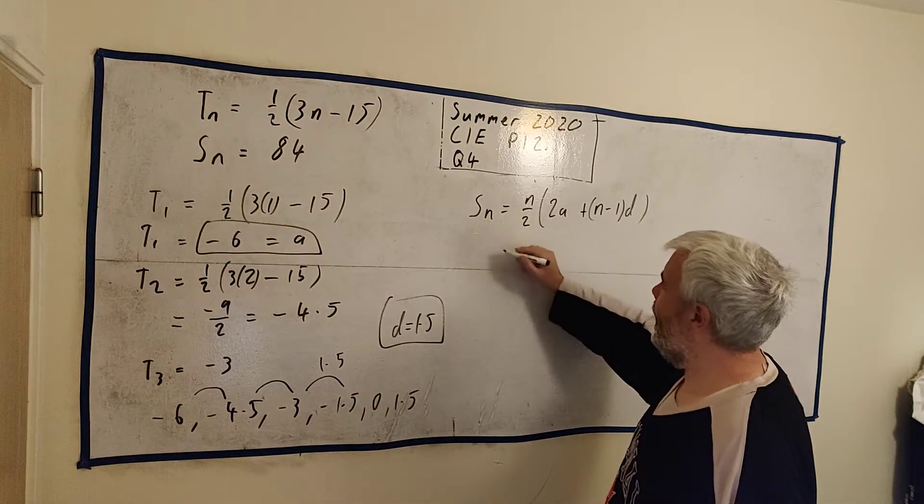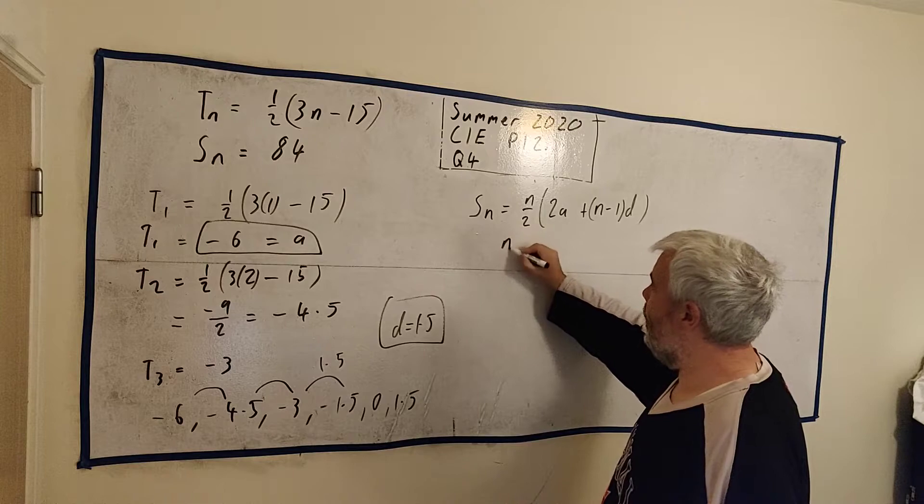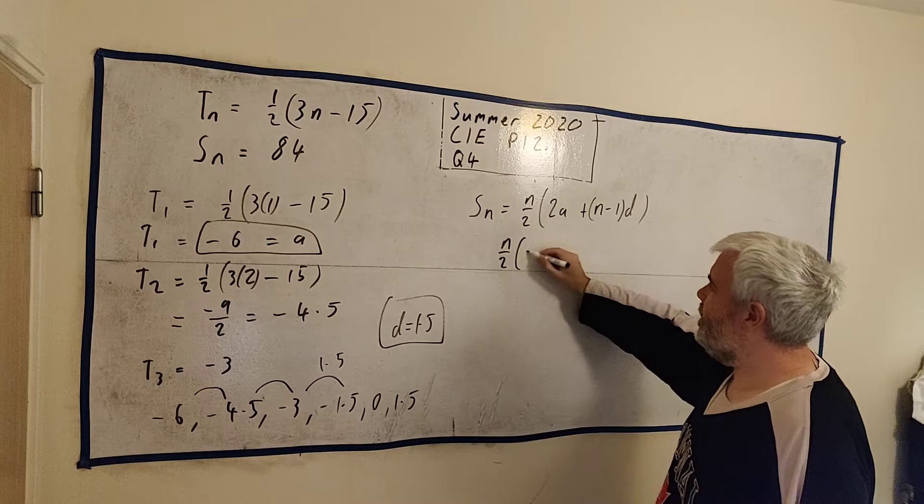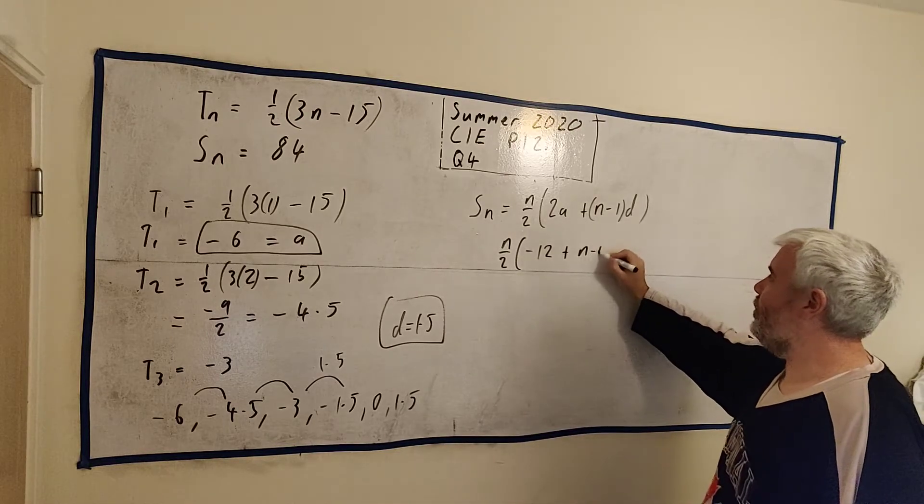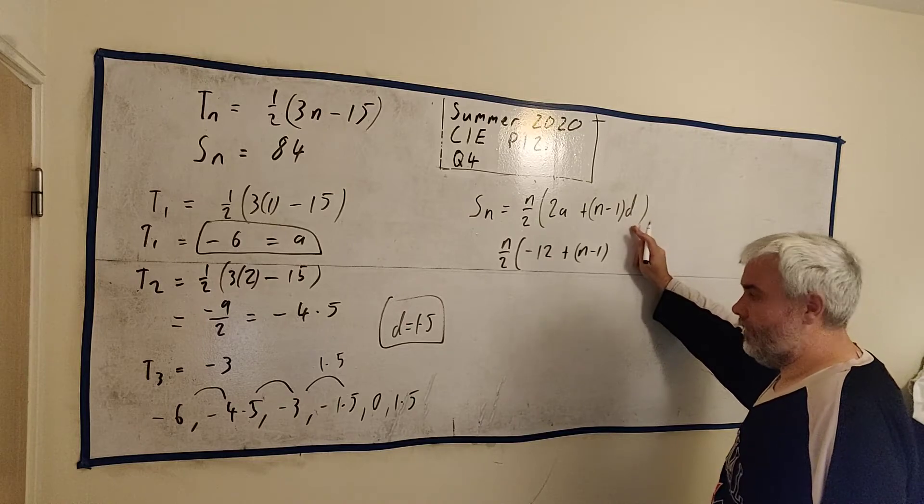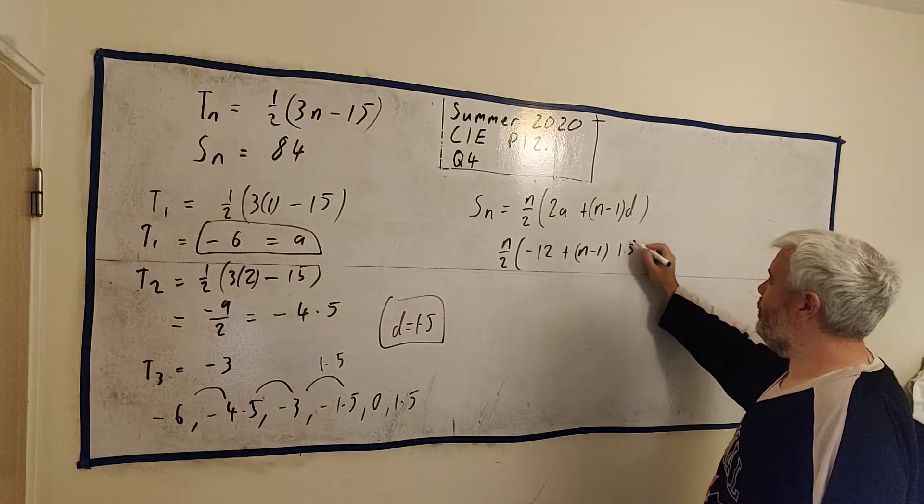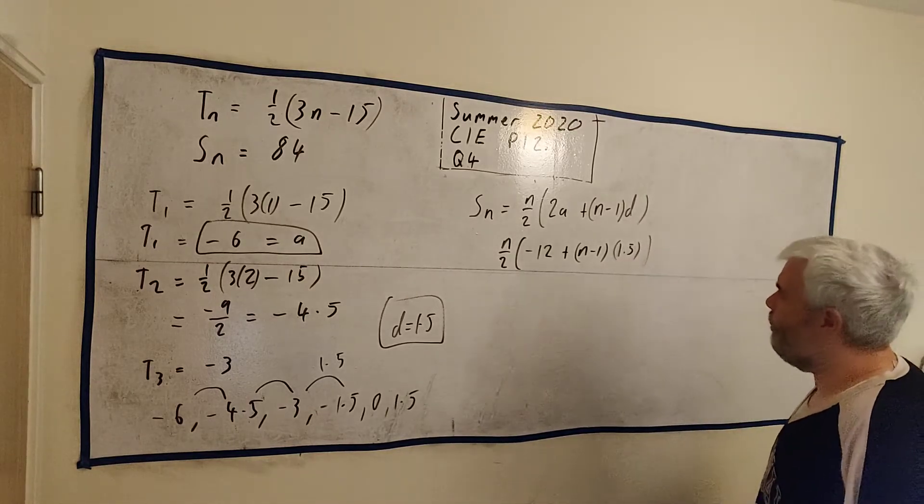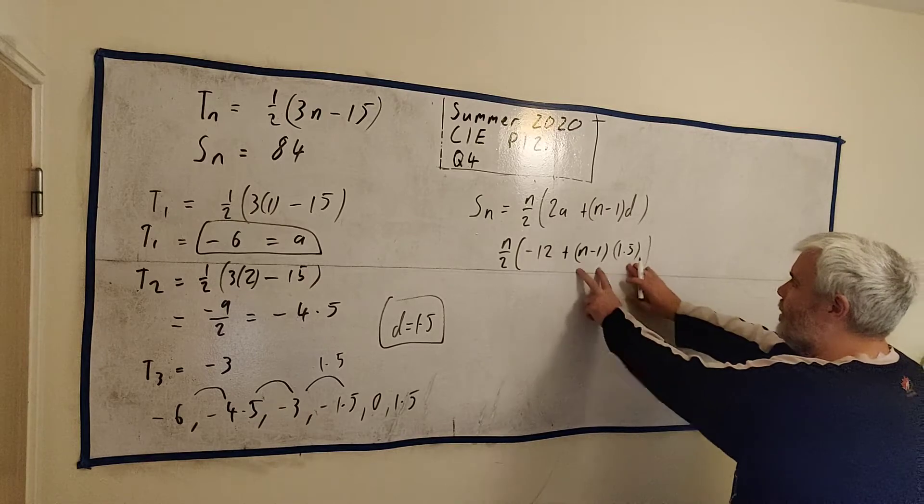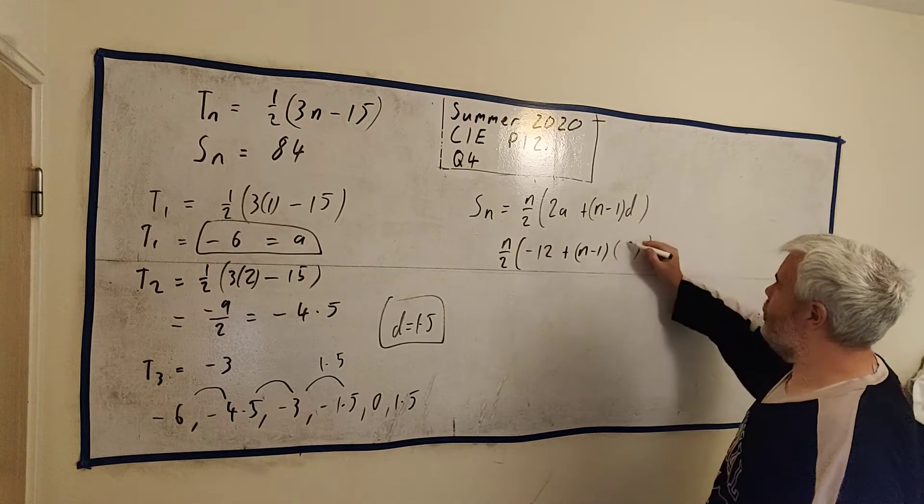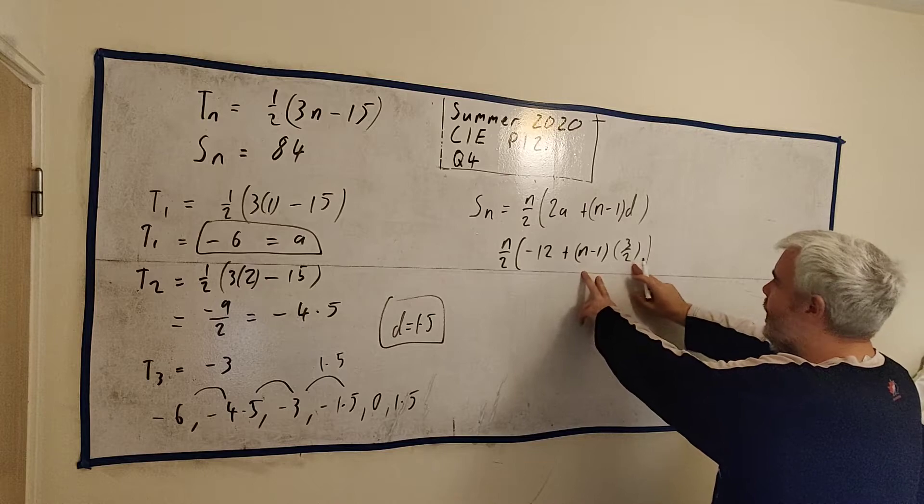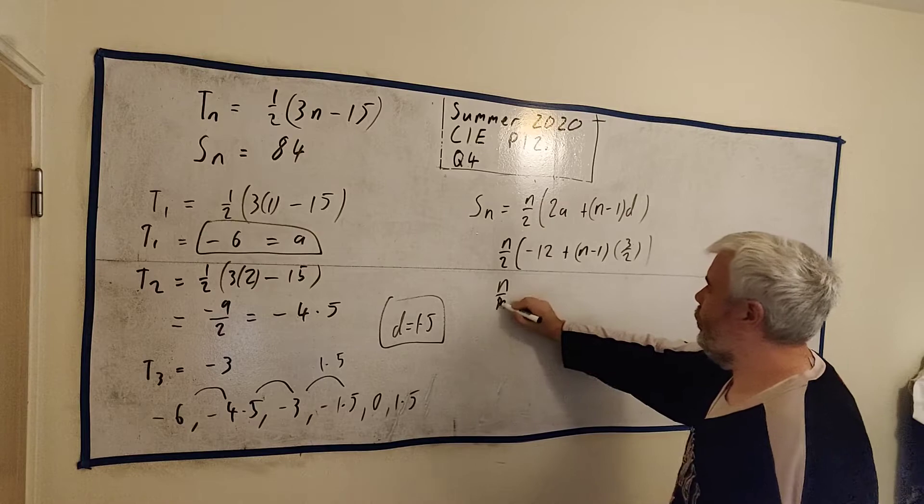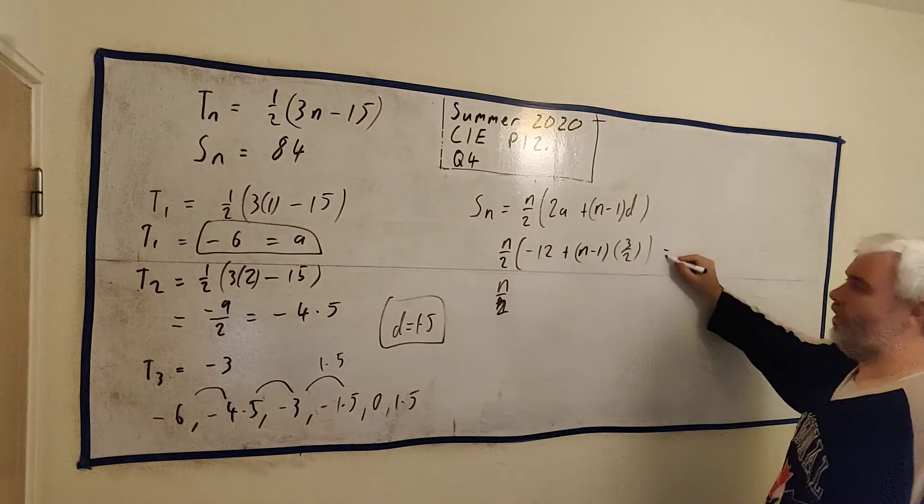I can fill this out then. Sn is equal N over 2 times 2 times minus 6 is minus 12 plus N minus 1 times D, which is 1.5. Or 3 over 2 would probably be easier to write in algebra. Let's fix that now when we multiply this all out. Let's change it now, 3 over 2. Let's multiply these two together first. N over 2. Remember, all this is equal to 84.